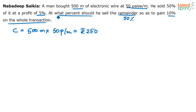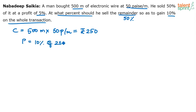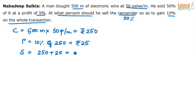How much profit are you expecting? You want 10% profit on the whole transaction. The overall profit required is 10%. Profit is always calculated on the cost price, so 10% of 250 rupees is 25. All these are mental calculations. Which means the total selling price should be 250 plus 25, which is 275.